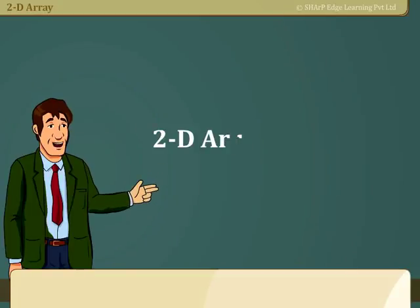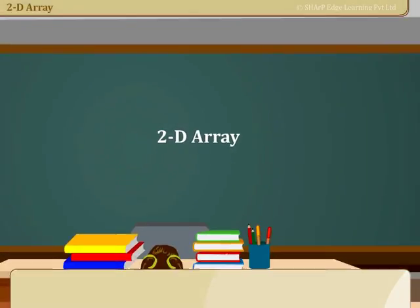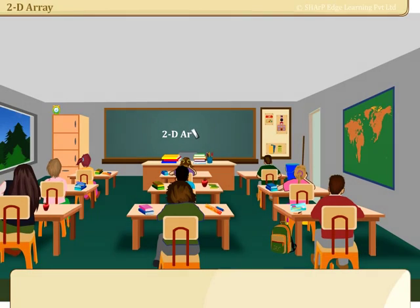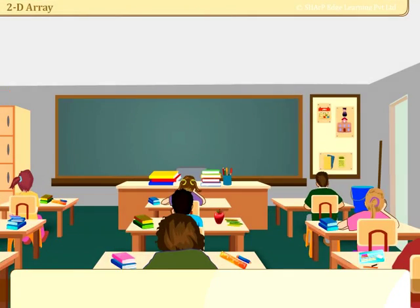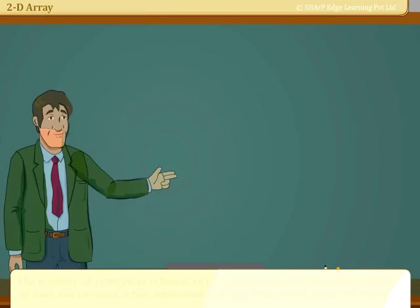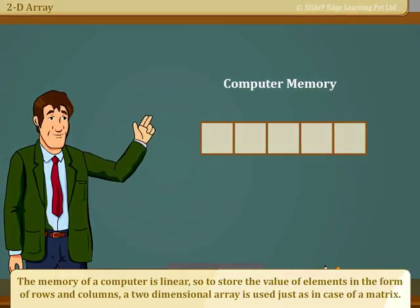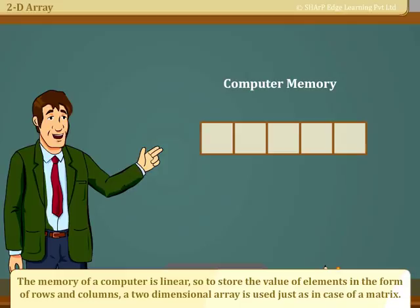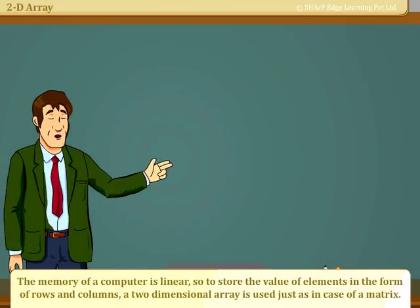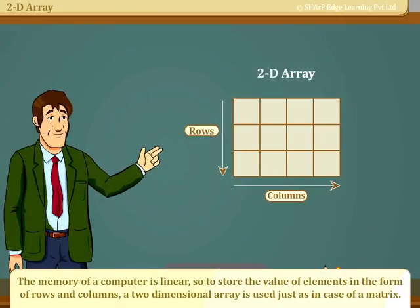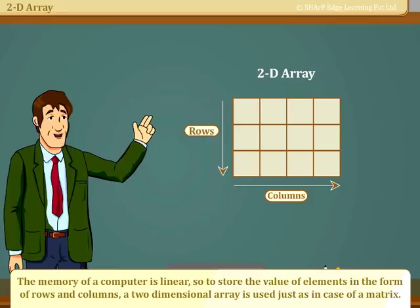2D Array. The memory of a computer is linear, so to store the value of elements in the form of rows and columns, a two-dimensional array is used, just as in case of a matrix.